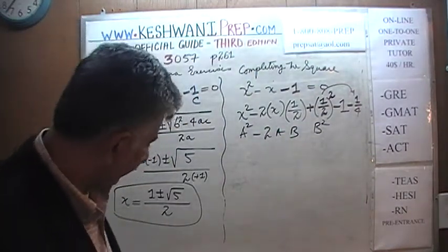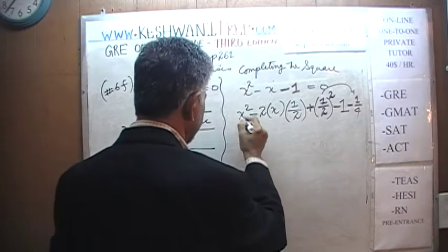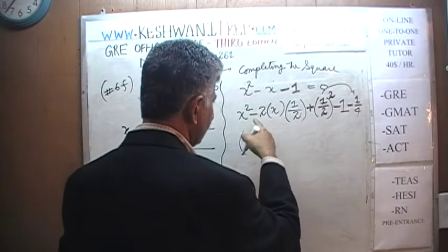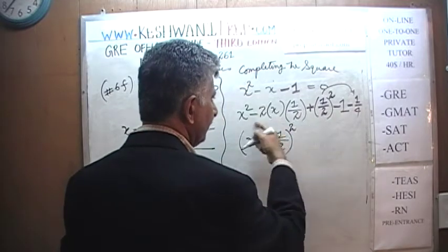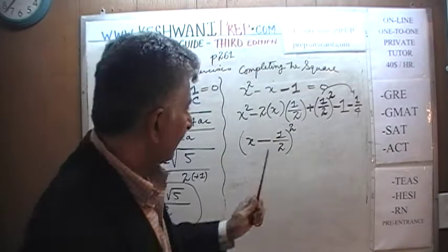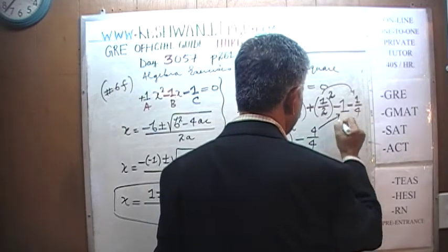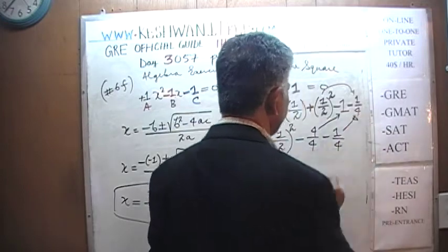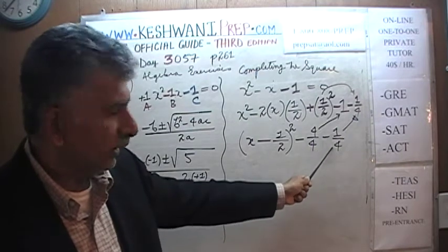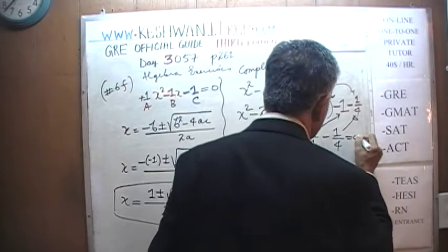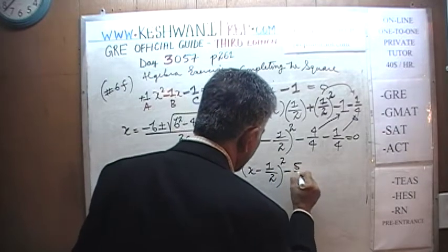Then we have the negative one. We have also introduced a positive one-half squared which was not there, so we must undo it by subtracting one-quarter. Negative one-quarter will cancel the positive one-quarter. Now we have our complete square: x minus one-half, the quantity squared.